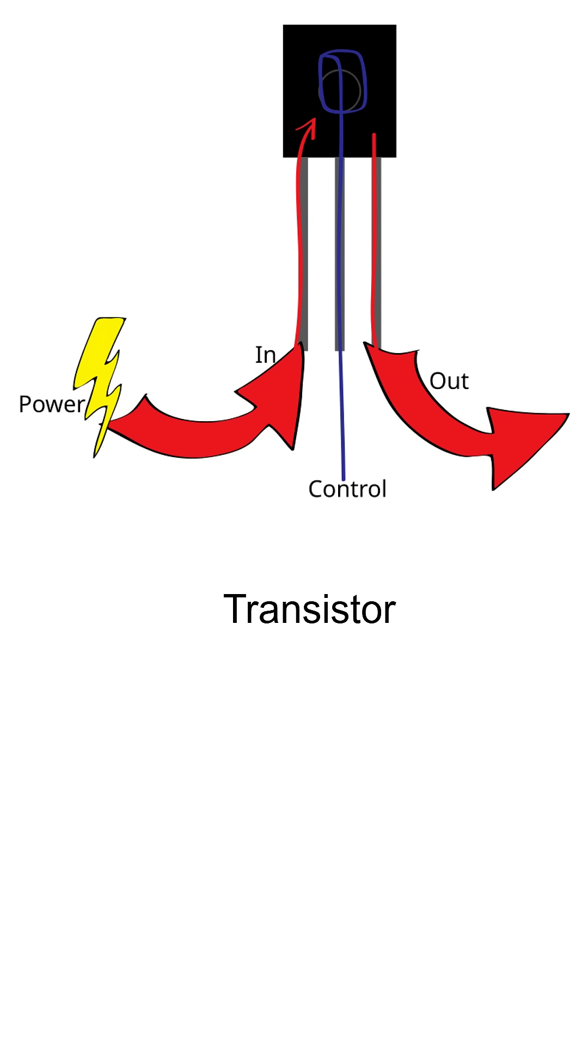It typically has an input, output, and control terminal. In a bipolar junction transistor, a small current at the base controls a larger current between the collector and emitter, while in a field effect transistor, a voltage at the gate controls the flow of current between the drain and source.